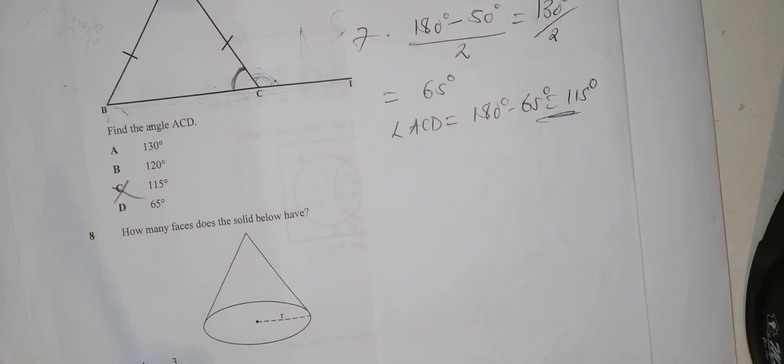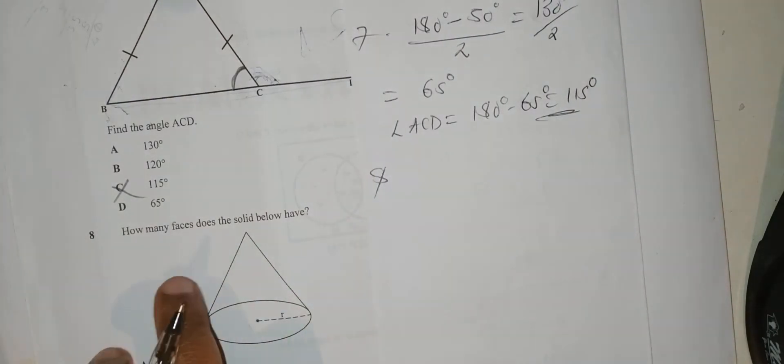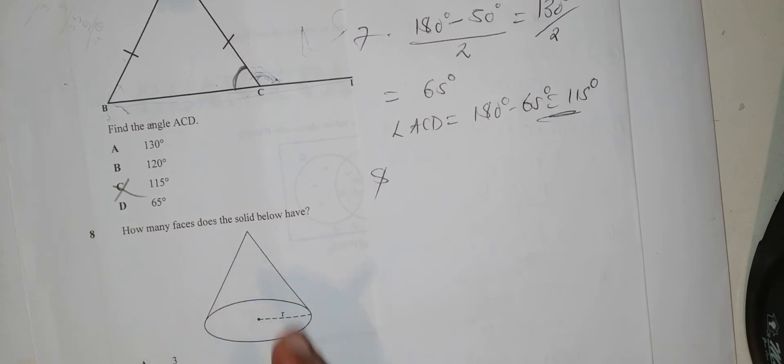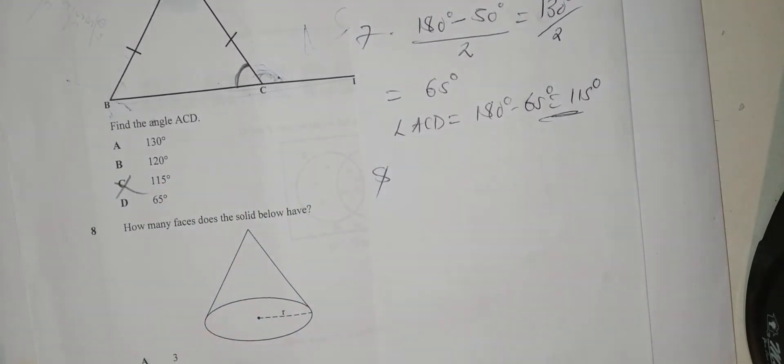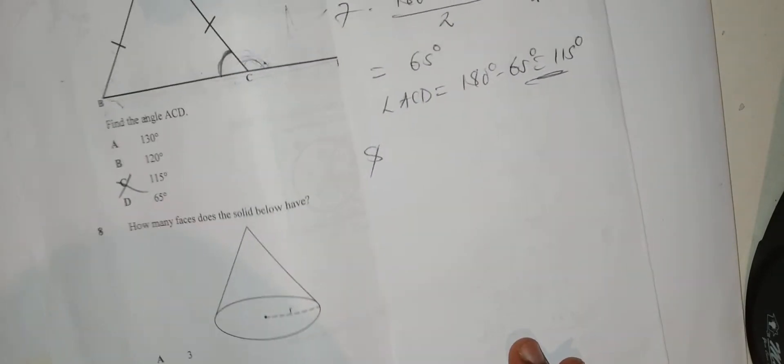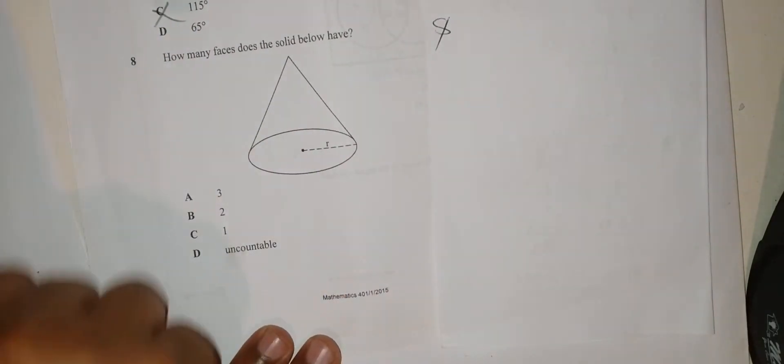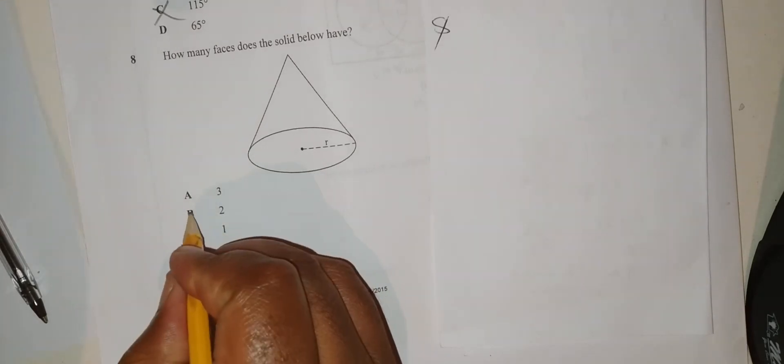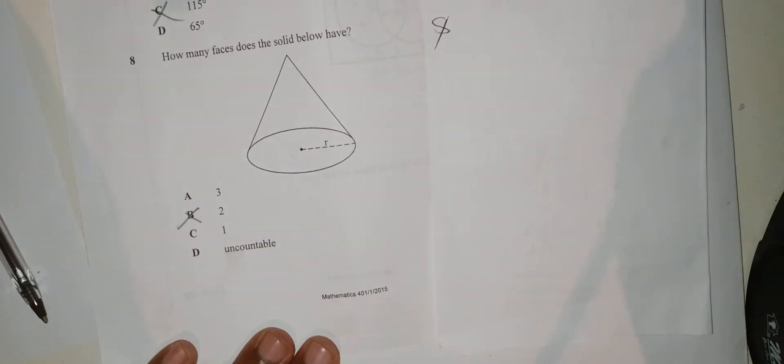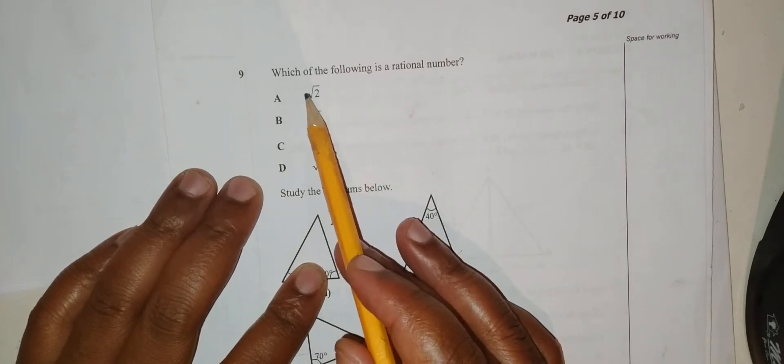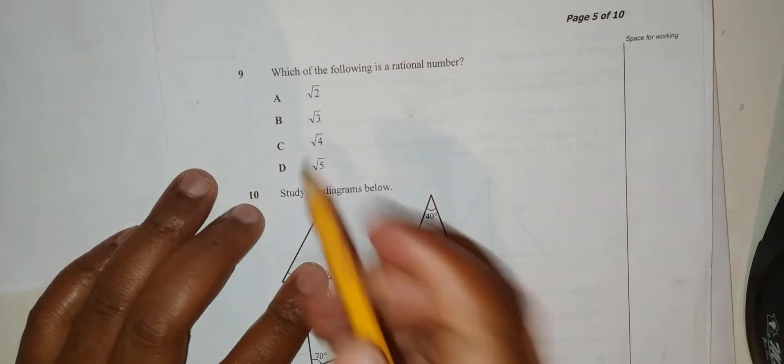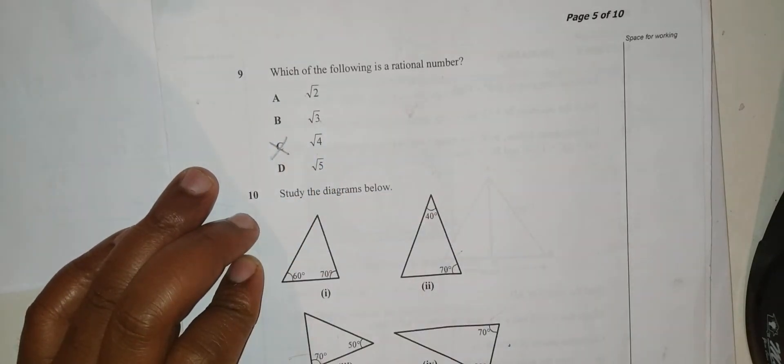Question 8: How many faces does the solid below have? There are two at the top, this one and the bottom. The answer is B. Question 9: Which of the following is a rational number? This is irrational, this is irrational, this is rational. Square root of a perfect square is a rational number.